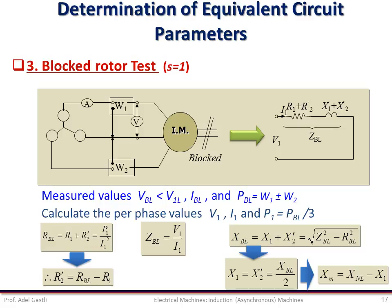With this, we have calculated all the parameters of the IEEE equivalent circuit, from stator to rotor and the magnetization branch. It is important to note that the rotor equivalent resistance R'2 plays an important role in the performance of the induction machine. A more accurate determination of this resistance is recommended by the IEEE, as we will see in the next slide.